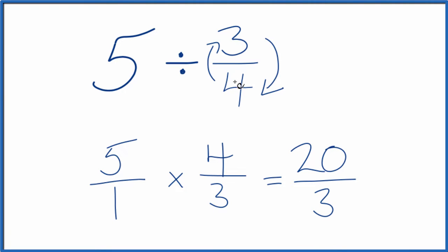So 5 divided by 3 fourths, that equals 20 over 3. This is an improper fraction. You might want to have this as a mixed number. To do that,